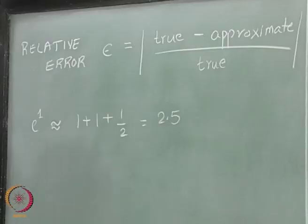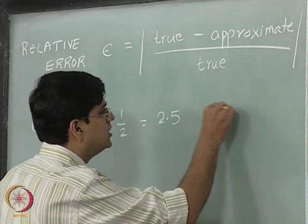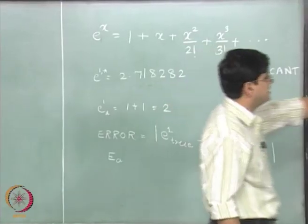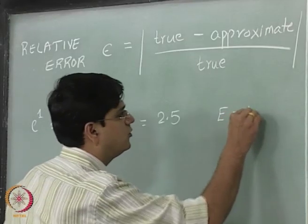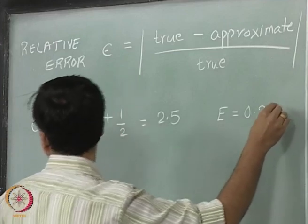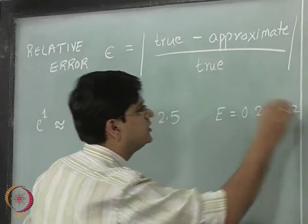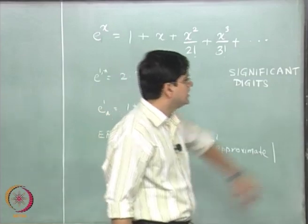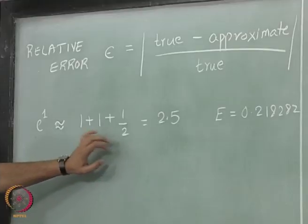The error over here is going to be 2.718 minus 2.5, that is 0.218282. That is what the error is going to be when we include three terms.